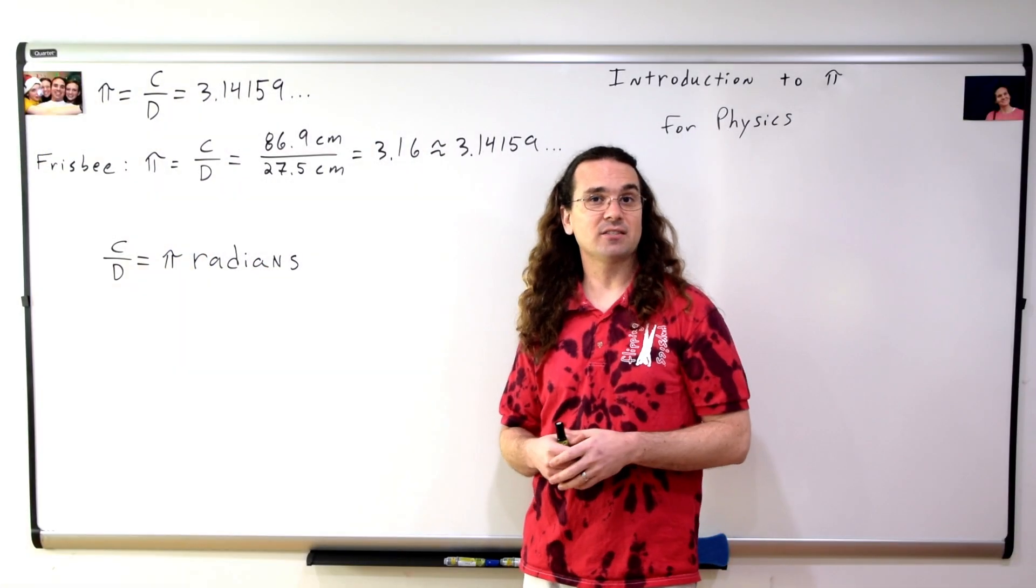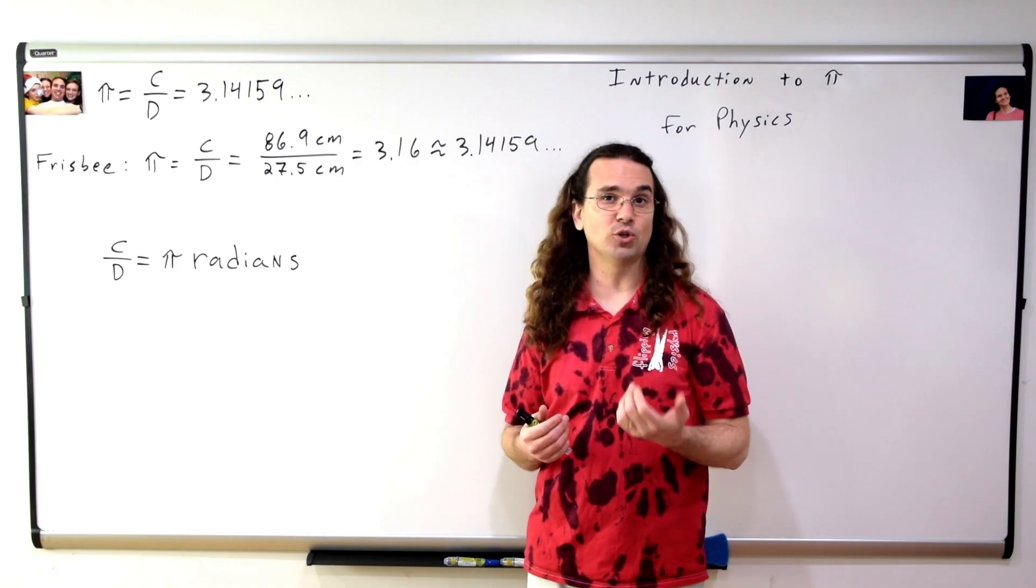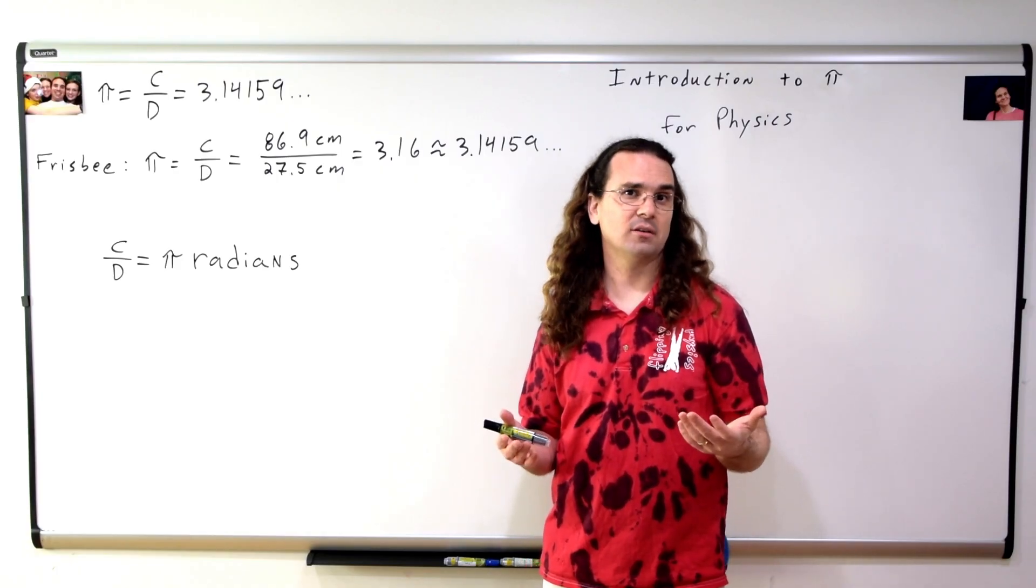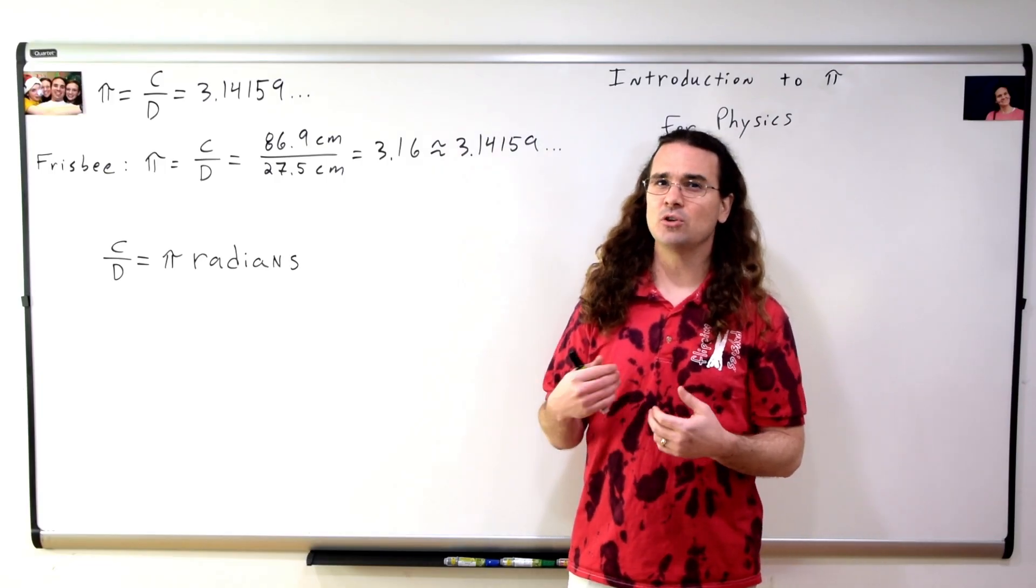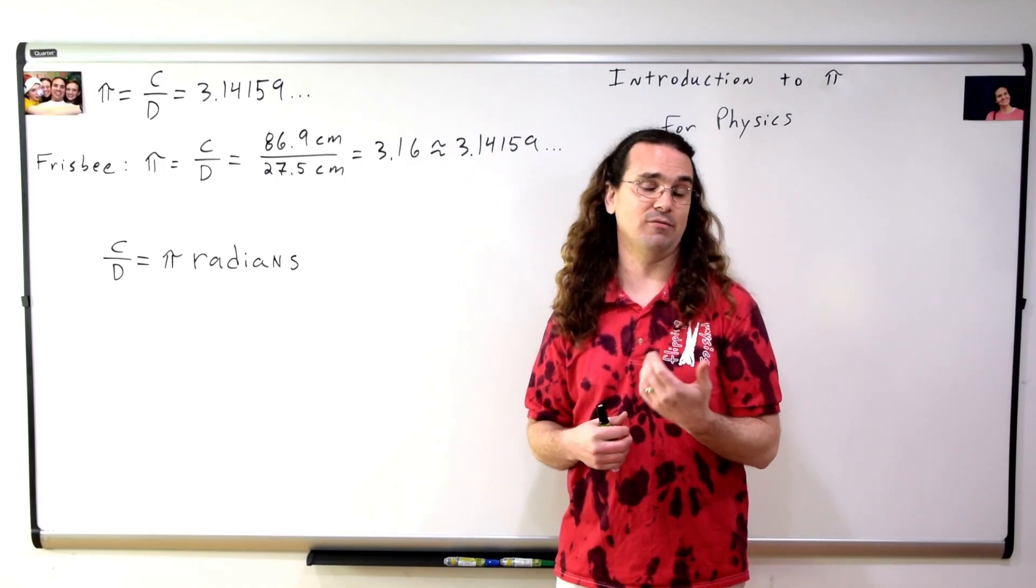And because the linear units cancel out, radians have no units, they are dimensionless. Because radians have no units, they are a placeholder and we will use this fact repeatedly in physics.